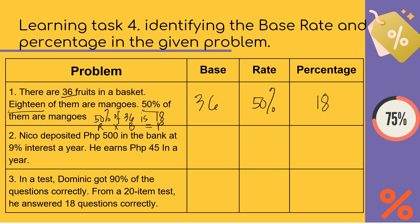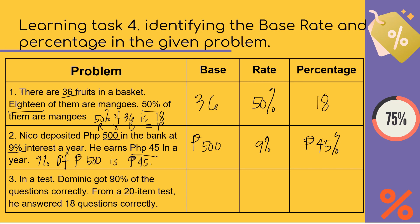Number two: Niko deposited 500 pesos in the bank at 9% interest per year. He earns 45 pesos in a year. So we have 500, 9%, and 45 pesos. The base is the larger number: 500 pesos. The rate is 9%. And the percentage is 45 pesos. Written as an equation: 9% of 500 is 45 pesos. I hope you can follow — you may answer number 3 and the rest on your own.